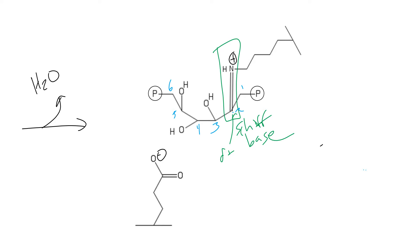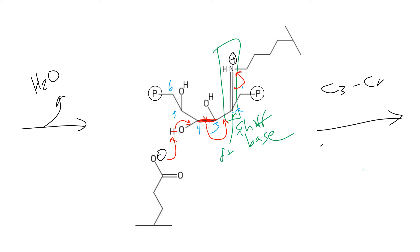Next, my negative charge on my glutamate is going to come in and grab this proton off of my carbon-4 hydroxyl. That's going to form a double bond between this oxygen and carbon-4. And that's actually going to break this carbon-4 to carbon-3 bond. The electrons from this bond are going to push up to make a double bond between carbon-3 and carbon-2, and then the electrons from the double bond in my Schiff base are going to push up onto my nitrogen. So at the end of this step, I've broken my C3-to-C4 bond.